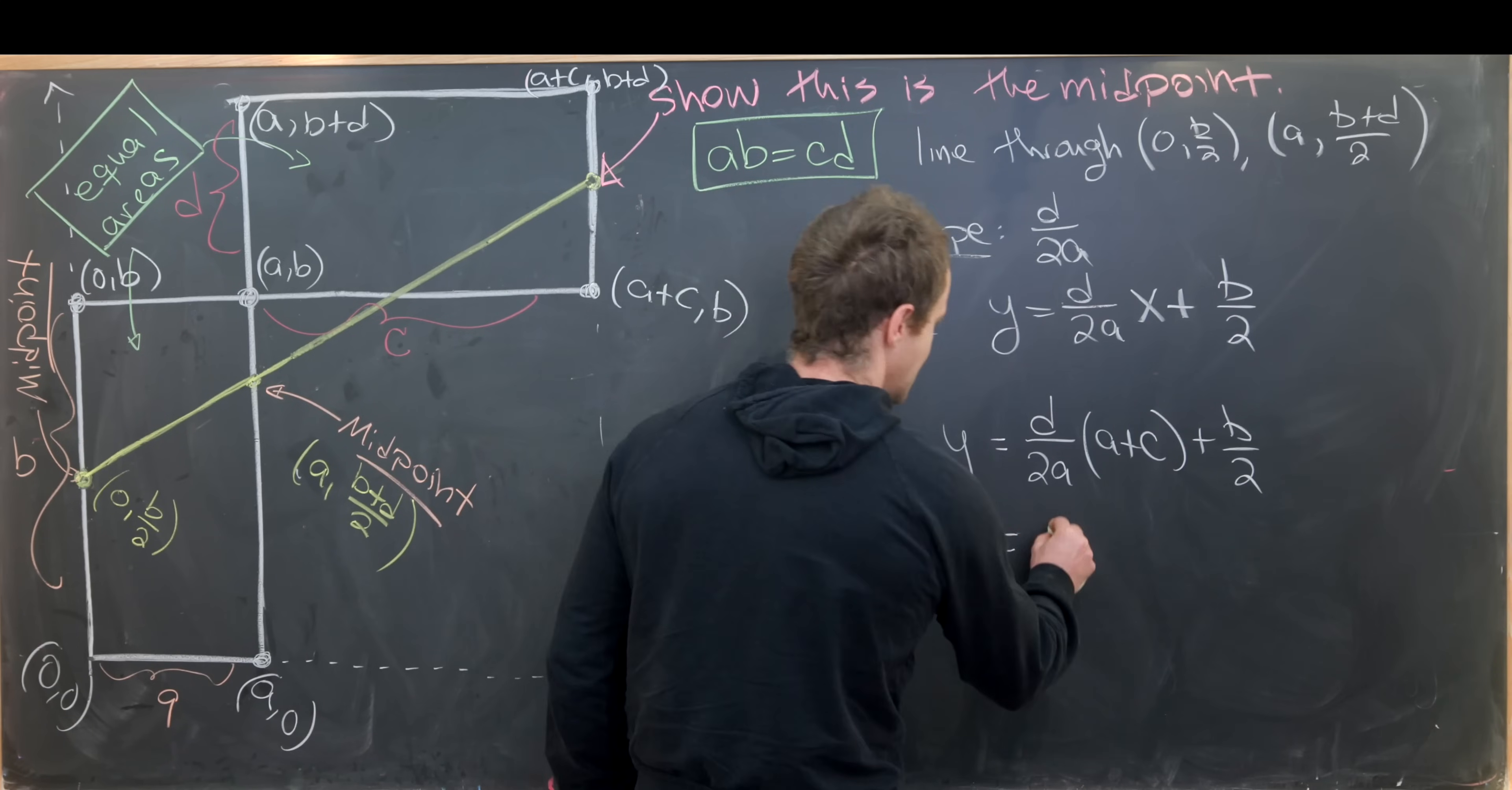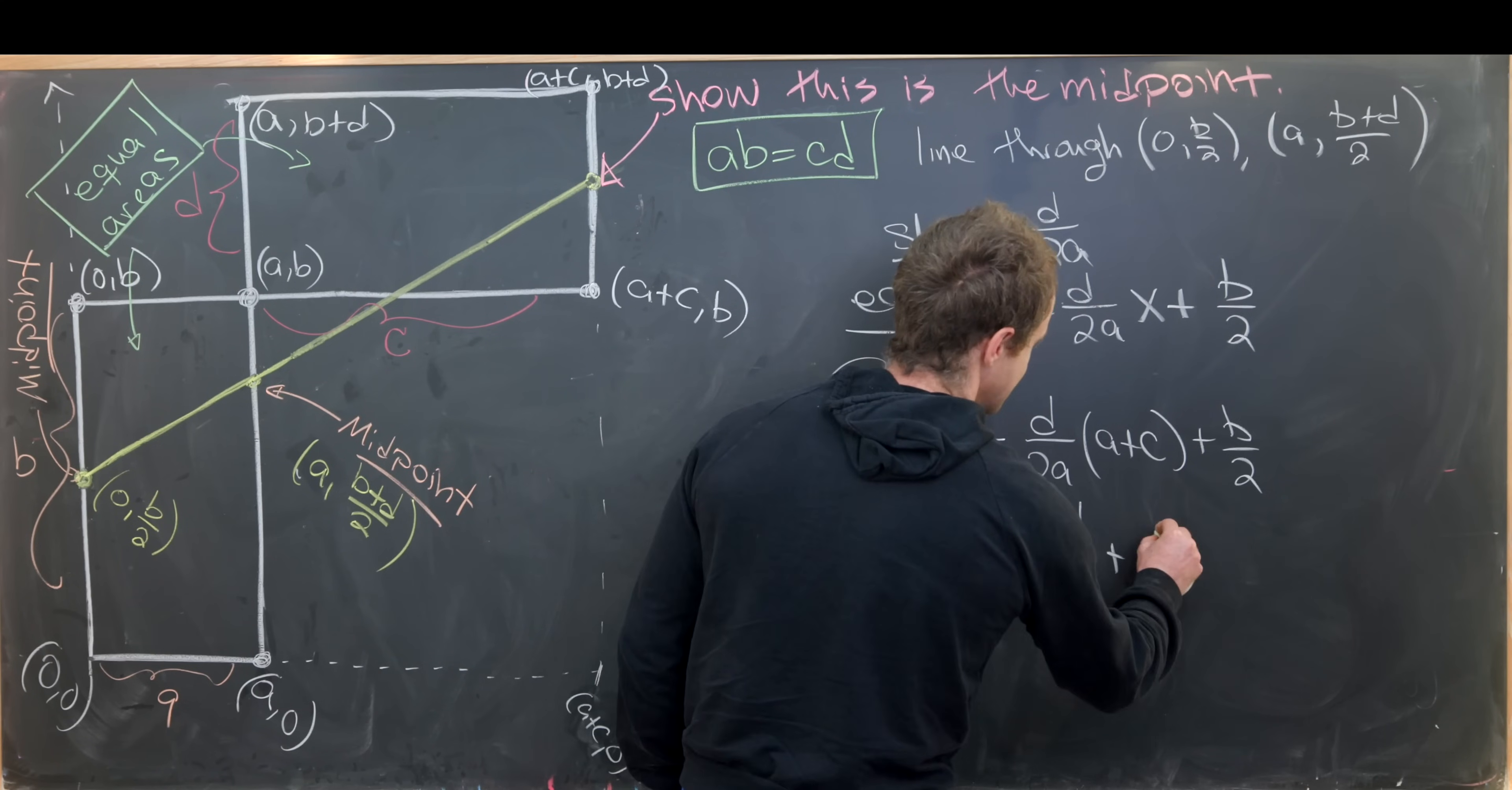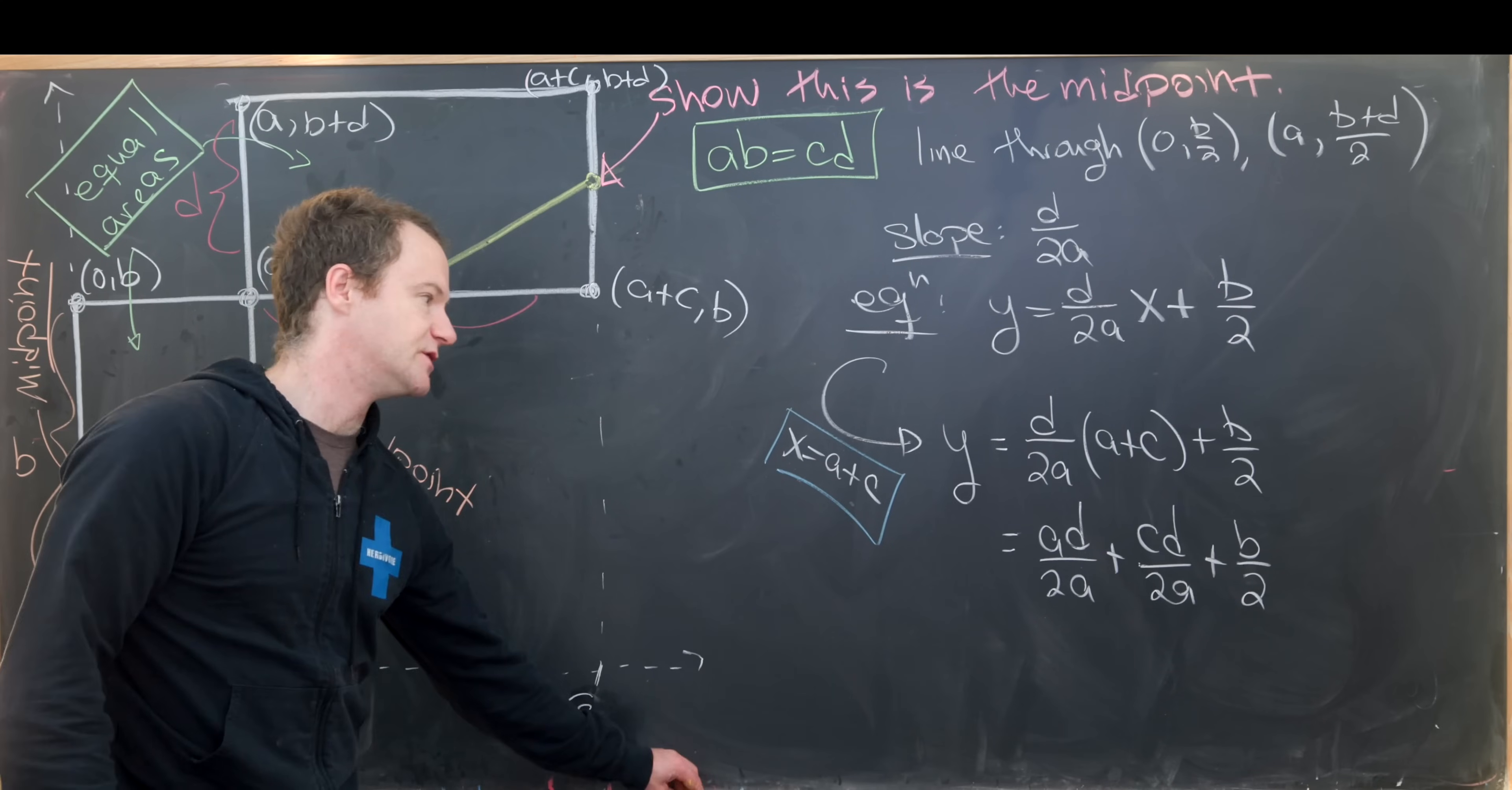Now let's simplify that. That gives us ad/2a + cd/2a + b/2. But now we can do some simplification. Notice here the a cancels with the a.